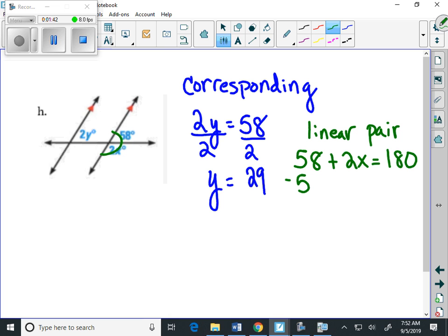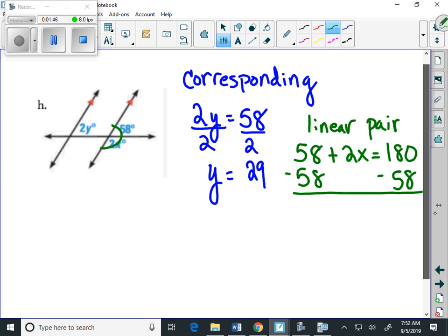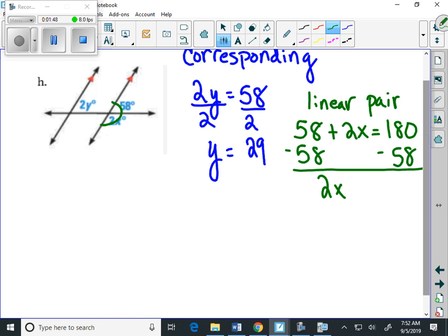And we subtract 58 from both sides, and we get 2x equals 122, and then we divide both sides by 2, and we get x equals 61.